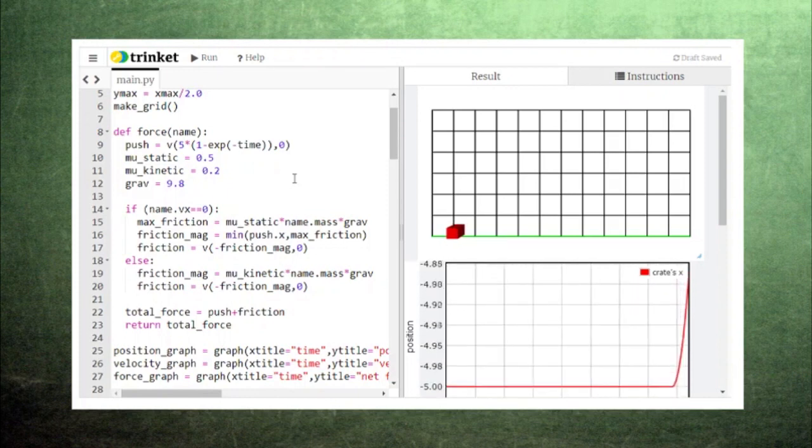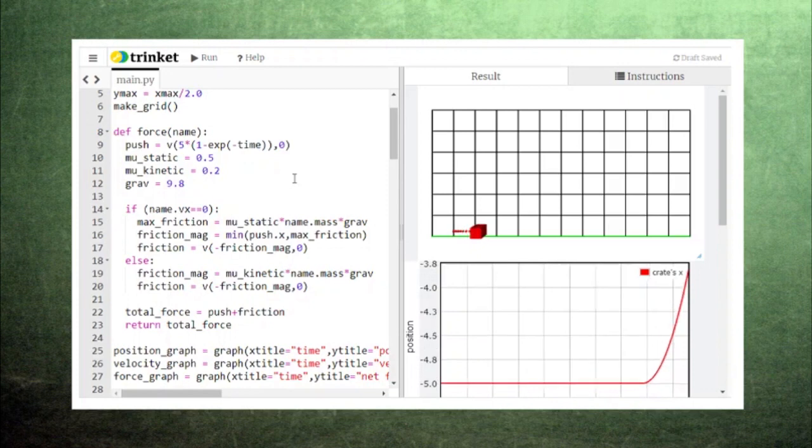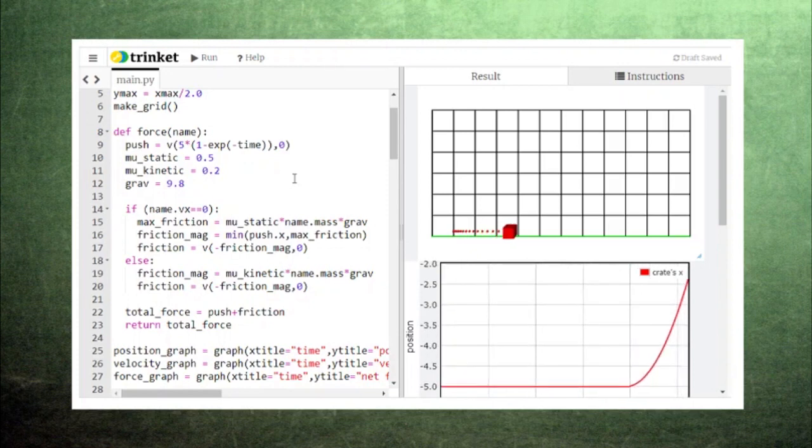We've learned how to model motion along a flat surface. In the real world, we often need to consider motion along a sloped surface like a ramp or a mountainside.